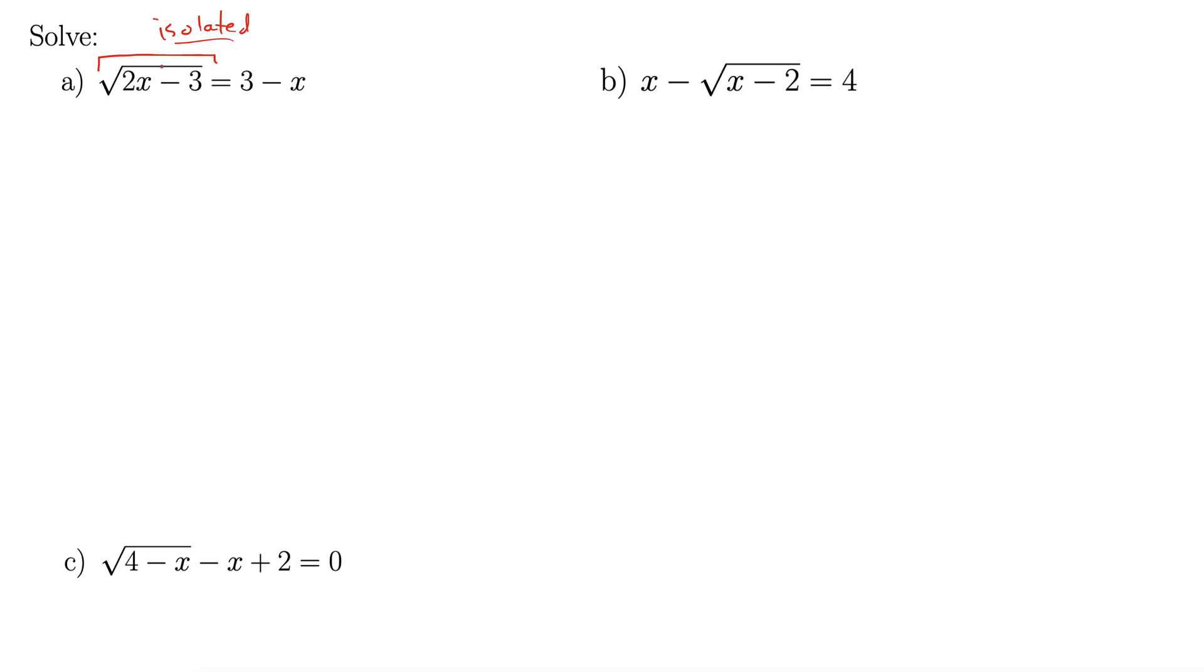Right, you always have to make sure that the square root is isolated on one side of the equal sign before proceeding with these. Otherwise you'll get all tangled up. Okay, so it's already isolated. That's good to go.